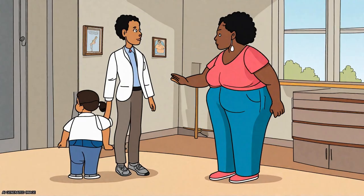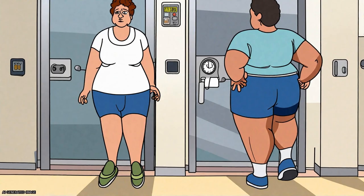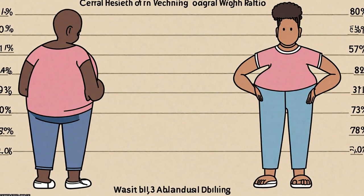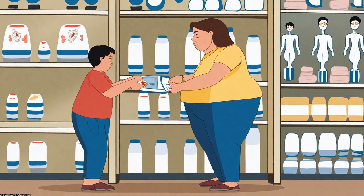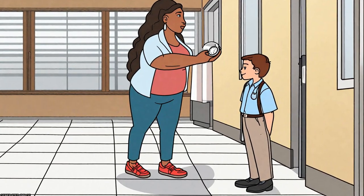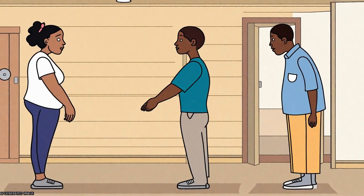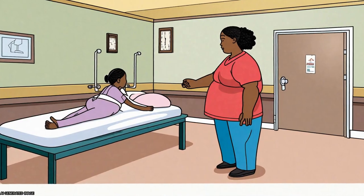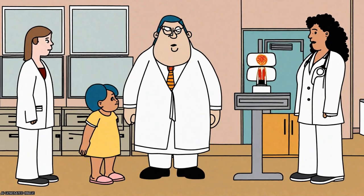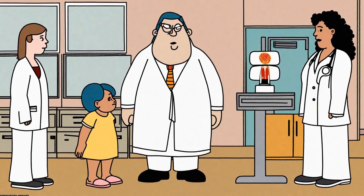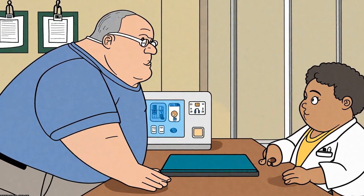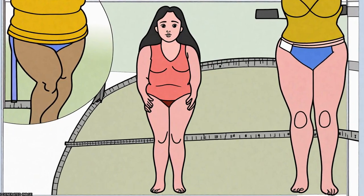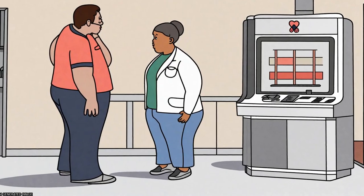Results showed that 9.2% of normal weight children were centrally obese and 19.8% of overweight obese children were not. On multivariate analysis, normal weight centrally obese children had significantly higher prevalence of adverse levels of LDL cholesterol, HDL cholesterol, triglycerides, and insulin, as well as a higher prevalence of parental history of type 2 diabetes mellitus and metabolic syndrome. In the overweight obese group, those without central obesity had significantly lower prevalence of parental history of hypertension, type 2 diabetes mellitus, and metabolic syndrome.